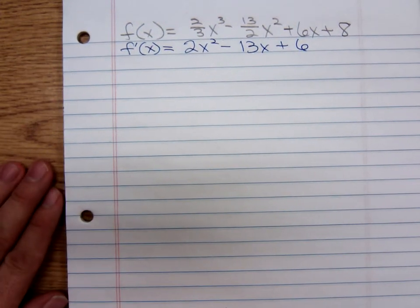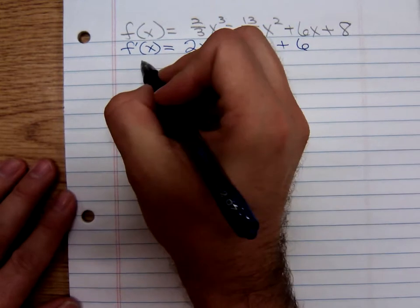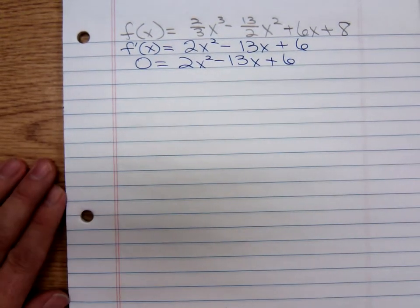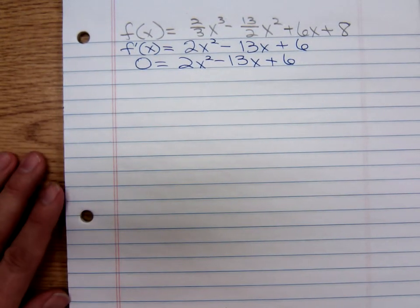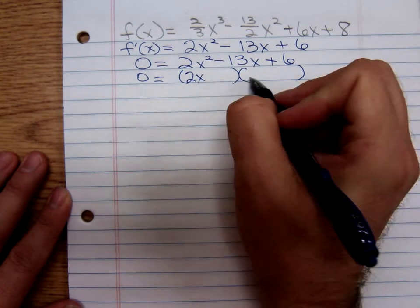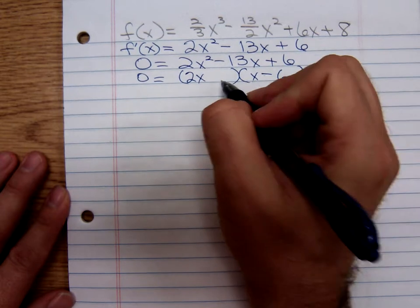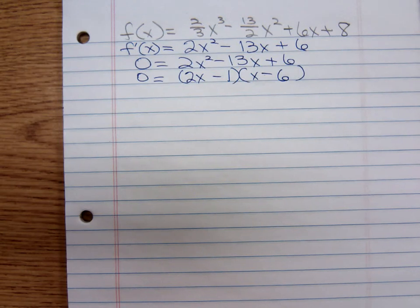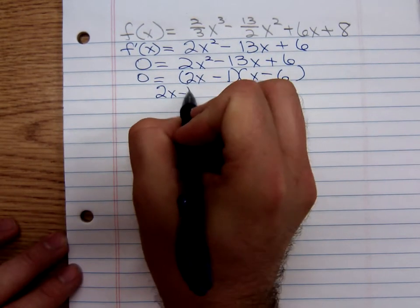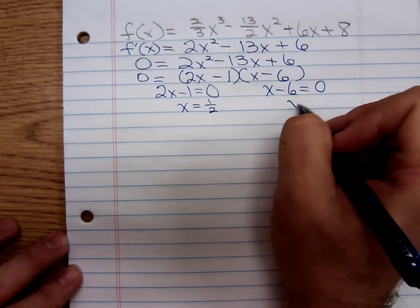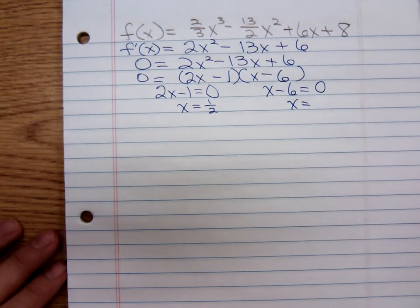We need to know when is this derivative equal to zero. We're finding our critical numbers. So we set that derivative equal to zero. And this is factorable. You all see it? We can use 2x times negative 1x, and we could use negative 6 times negative 1. If you foil that back out, do you get 2x squared minus 13x plus 6? Yes. Set each factor equal to zero to give us x equals one-half or x equals six.